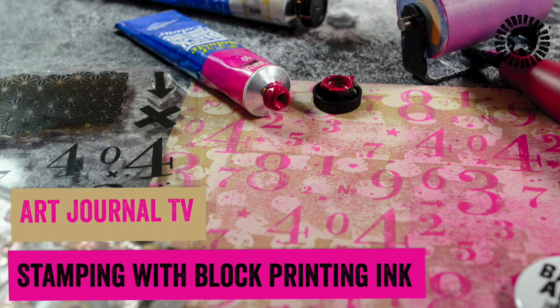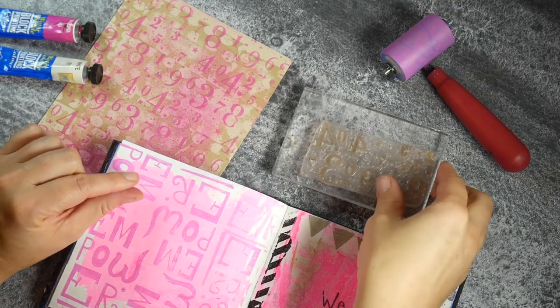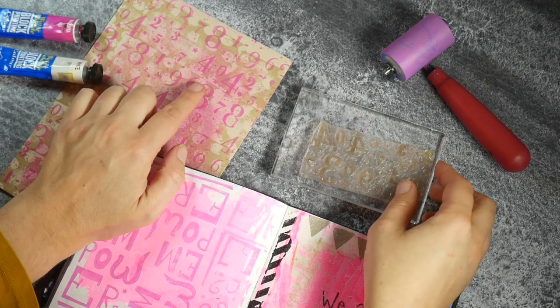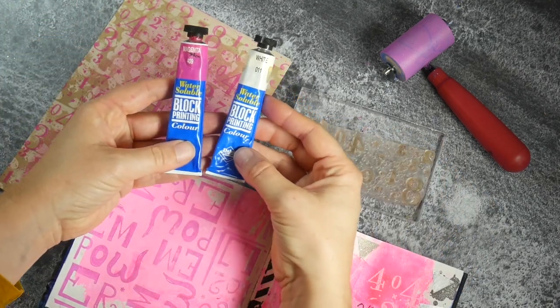Sometimes you just want to make really perfect prints with your stamps. In this video I show you how you can make perfect opaque prints of your stamps using water-soluble block printing colors.